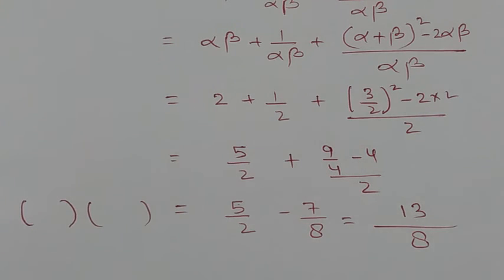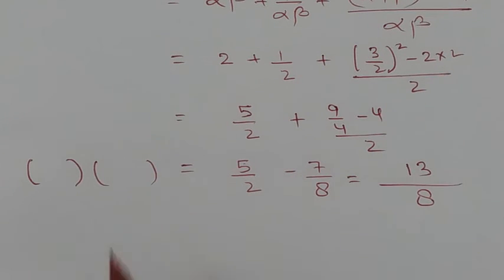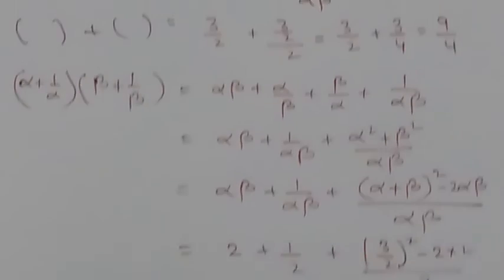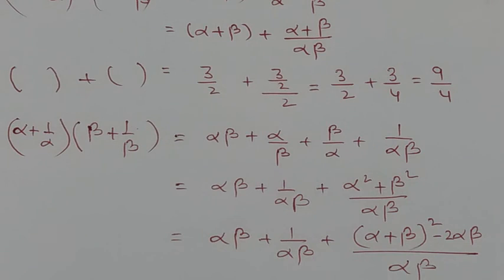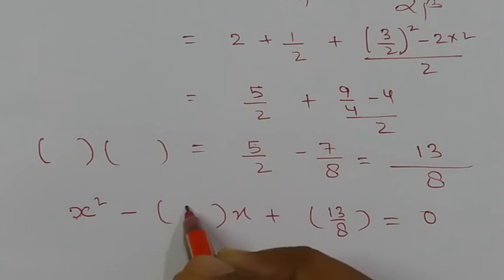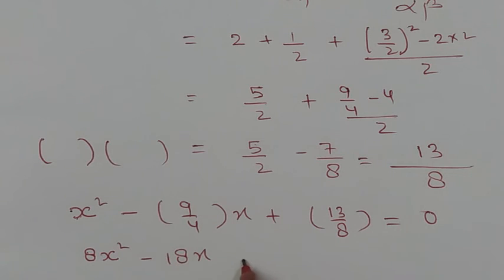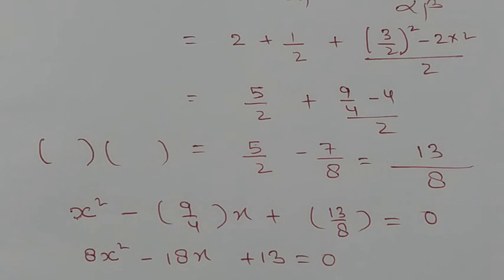Now we have sum of roots = 9/4 and product of roots = 13/8. The new equation is x² - (9/4)x + 13/8 = 0. Multiplying through by 8: 8x² - 18x + 13 = 0. This is the answer. All questions of this topic can be solved this way, and any further problems will be discussed in the next video.